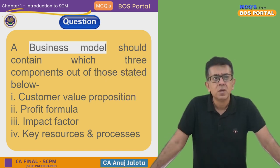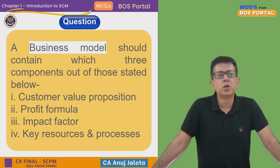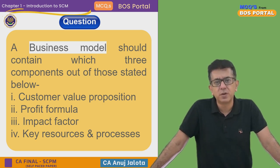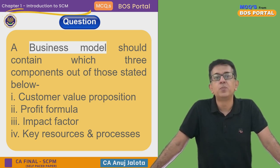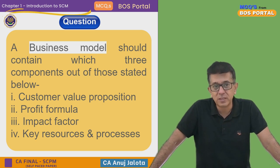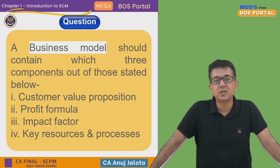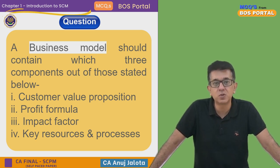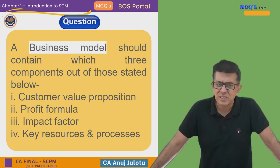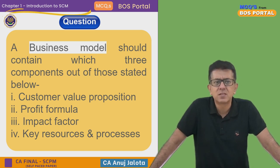The question for today: a business model should contain which of the three components out of those stated below? First, customer value proposition; second, profit formula; third, impact factor; fourth, key resources and processes.